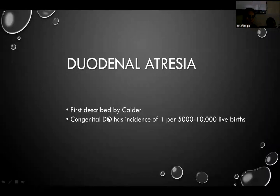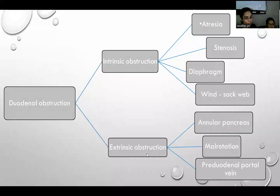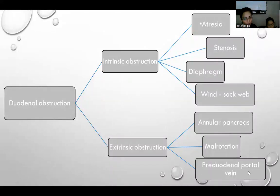Duodenal obstruction was first described by Calder. Congenital duodenal obstruction has an incidence of 1 in 5,000 to 10,000 live births. It could be due to intrinsic obstruction or extrinsic obstruction. Intrinsic causes include atresia, stenosis, diaphragm, and windsock web. Extrinsic causes include annular pancreas, malrotation, and pre-duodenal portal vein.